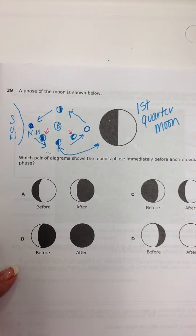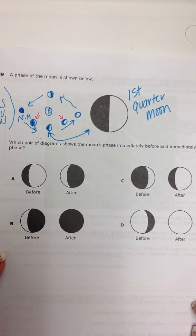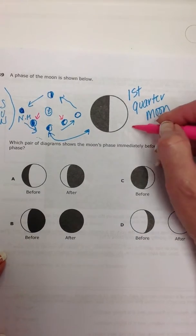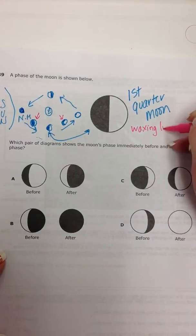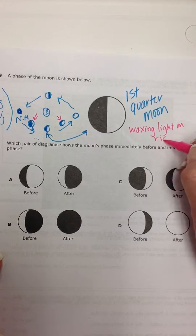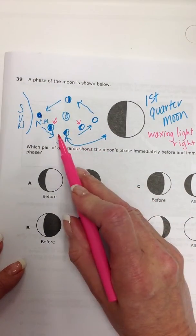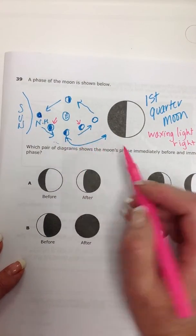Let's see if we can find those in our answer choices. Waxing, the light is always on the right. So as you can see in our little diagram we drew, our light has to be on the right-hand side.